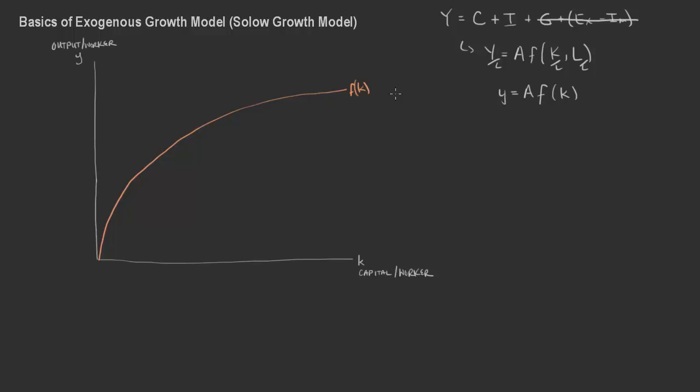That curve represents the level of output per worker — roughly GDP per person — for every amount of capital per worker that we have. If you invest in capital that makes individuals more productive, then we would be able to produce a corresponding amount of output per worker at any given level of capital per worker.